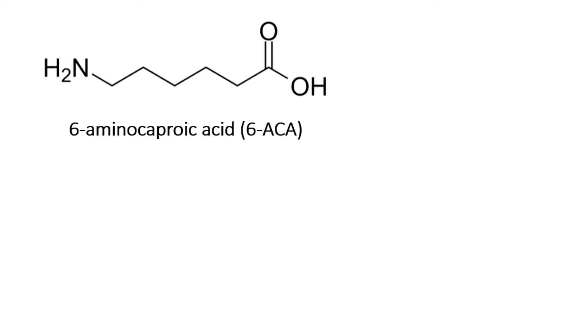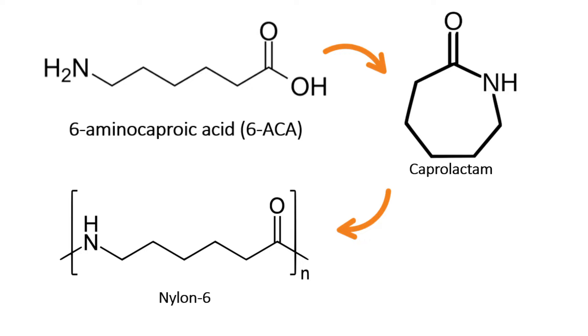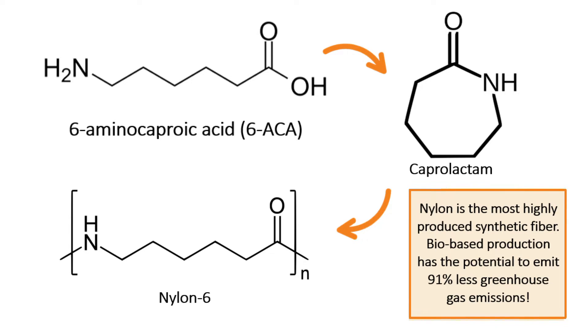6-amino caproic acid is the linear form of caprolactam, which is the building block of Nylon-6. Nylon is the most highly produced synthetic fiber globally, and bio-based production of the polymer has the potential to emit 91% lower greenhouse gas emissions than the fossil-based chemical process today.